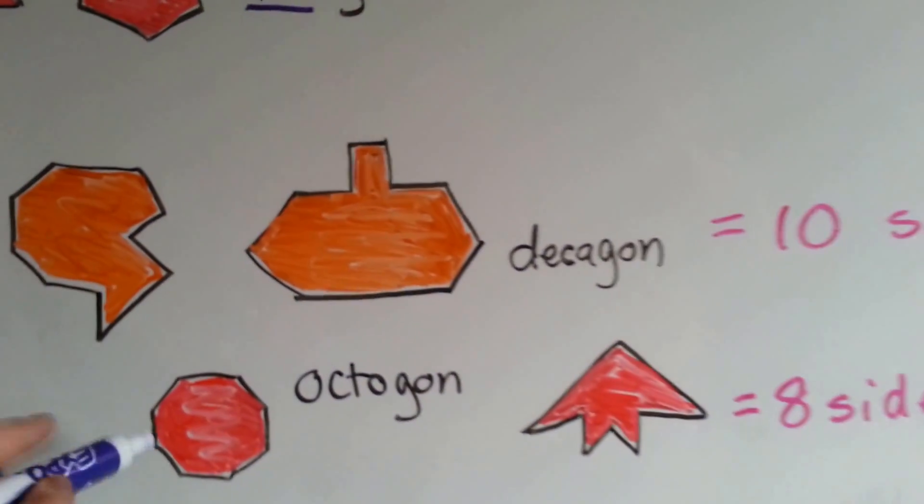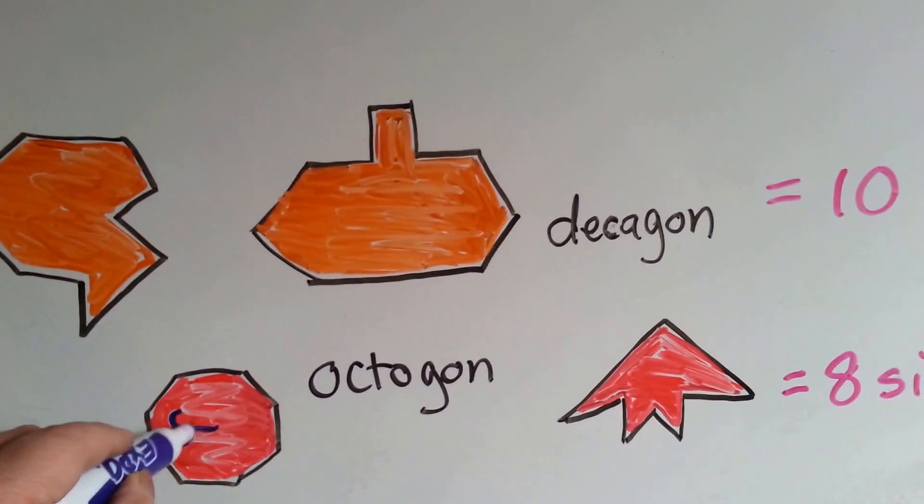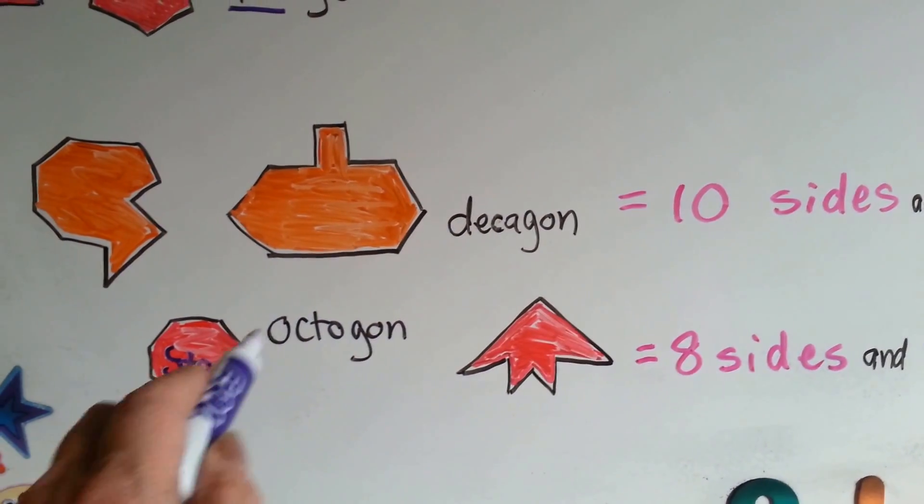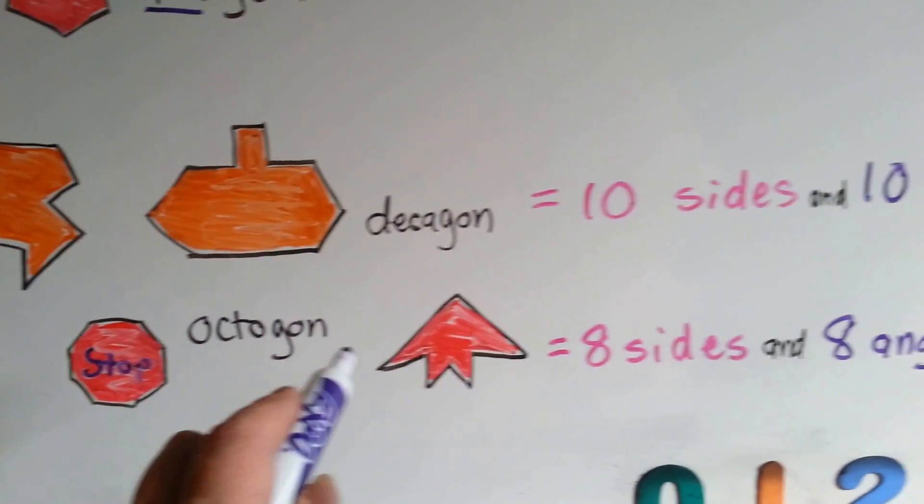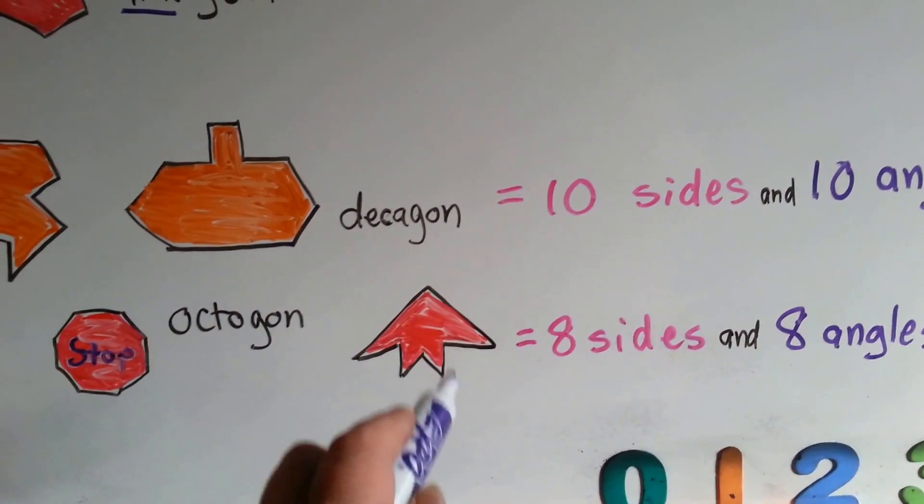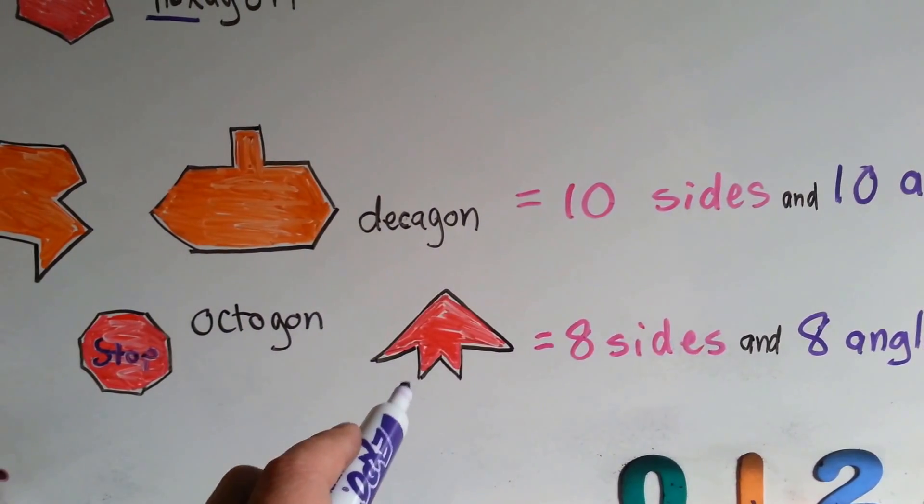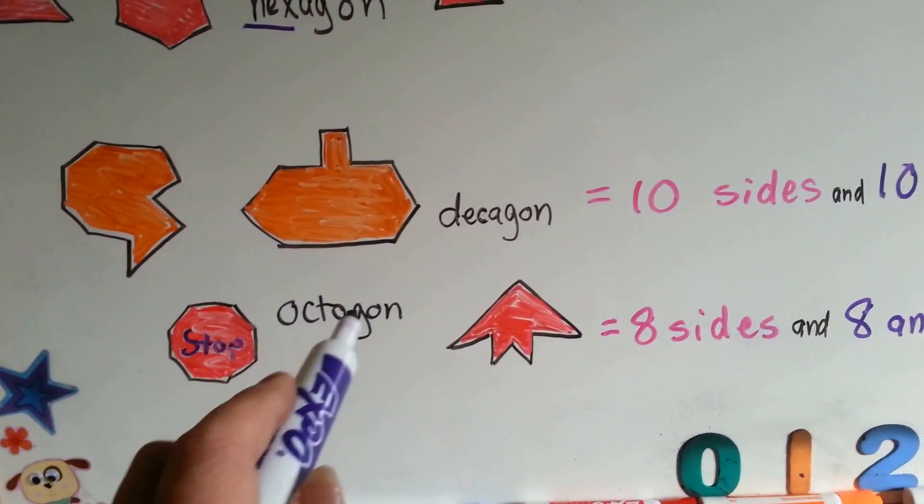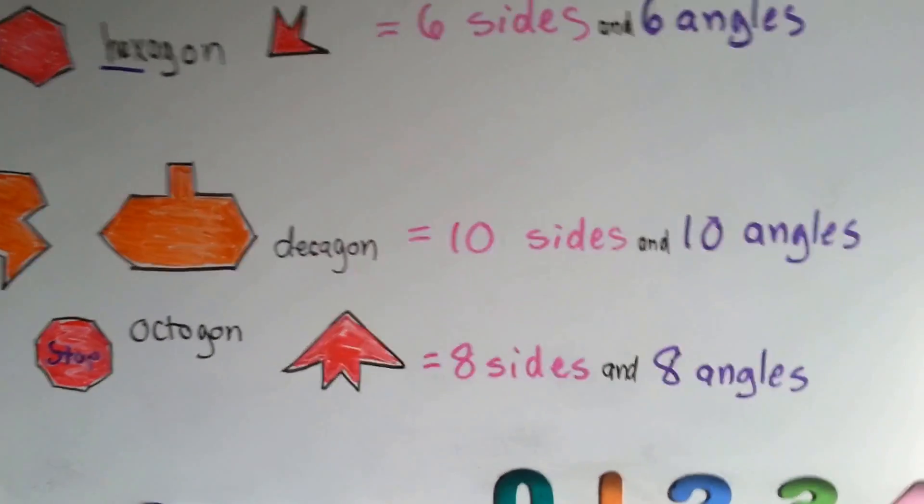And an octagon, which kind of looks like a stop sign, doesn't it? Did you know stop signs are in the shape of an octagon? It has eight sides and eight angles. And as long as it's closed and it's made of straight line segments, then it's a polygon. And if it's got eight sides and eight angles, it's an octagon.